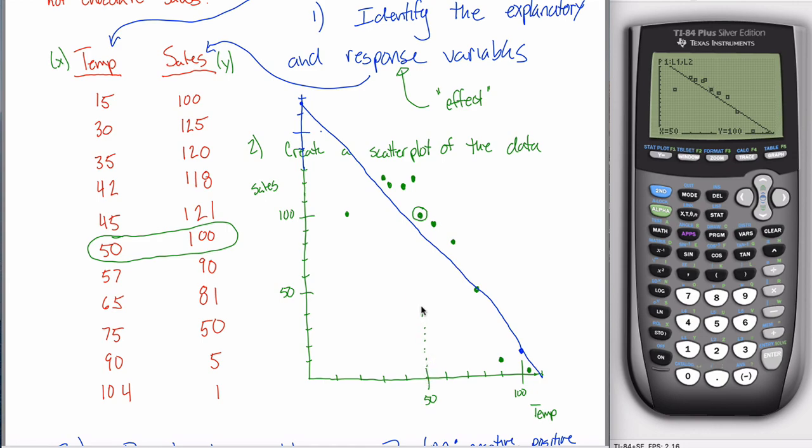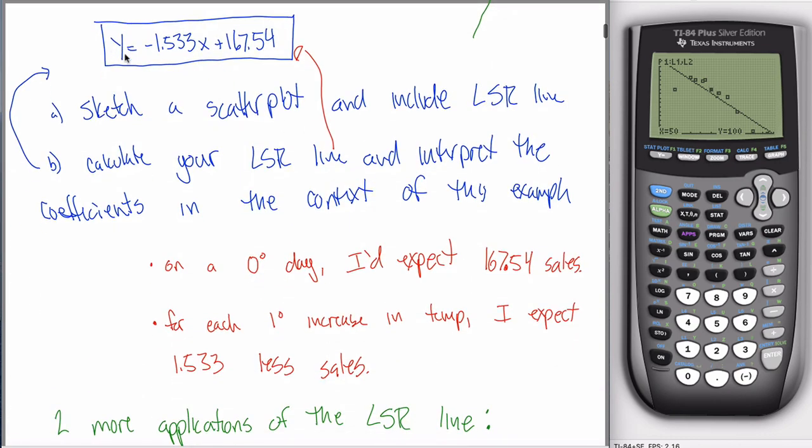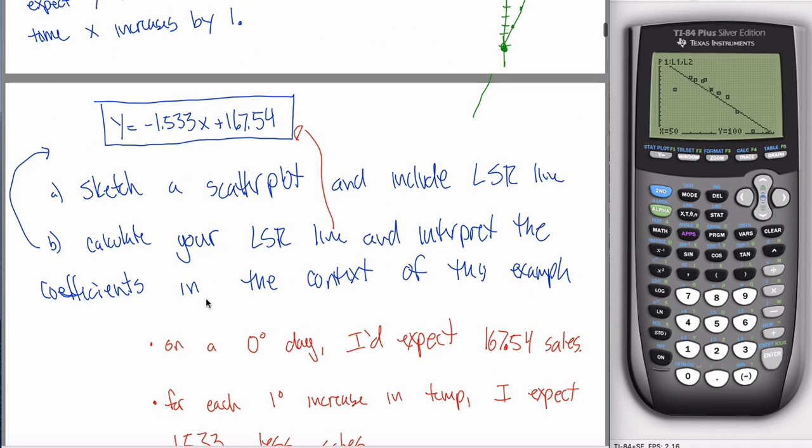And the way you do that is instead of just looking at the dot, look at the line. Because the line was created to best fit all of the data points. So in a sense, the line takes into account all of these green dots here. So all I have to do to make my prediction is ask myself the question, what is the height of the line when the X value, the temperature is 50? So we can kind of ballpark that. It's hard to do, but it kind of looks like the height of the line here when the line has an X value of 50 is, I don't know, somewhere in the 90 range.